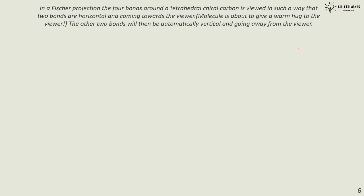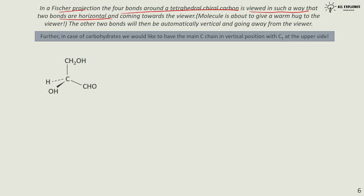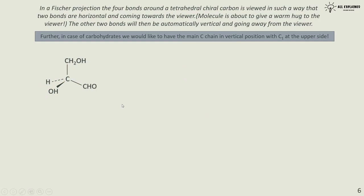In a Fischer projection, the four bonds around a tetrahedral chiral carbon are viewed such that two bonds are horizontal and coming toward the viewer. Looking at the chiral carbon with its four bonds, you pick any two groups and place them horizontally, coming toward you. The key rule: horizontal bonds come toward you, vertical bonds go away from you.